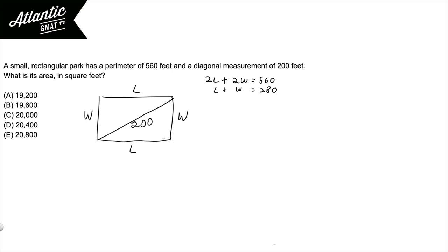And in this case, you've got a right triangle. And for right triangles, always be thinking about Pythagorean theorem. L squared plus W squared here is going to equal 200 squared.